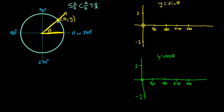If I make a right triangle by connecting this back down to the x-axis, in this right triangle this side has length x — because to get to this point we travel x units horizontally and y units vertically — so this side has length y. The hypotenuse of the right triangle is the length from the center of the circle to a point on the circle. Since it's a unit circle, the radius has a length of 1. So we can rewrite our primary trig ratios in terms of x and y.